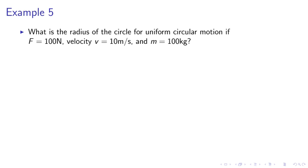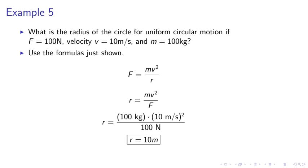Example 5. What is the radius of the circle for uniform circular motion if F equals 100 newtons, velocity v equals 10 meters per second, and m equals 100 kg? We use the formula for the centripetal force, mv squared over r. So, we solve for r given m, the velocity, and the force. So, we obtain r equals 10 meters.